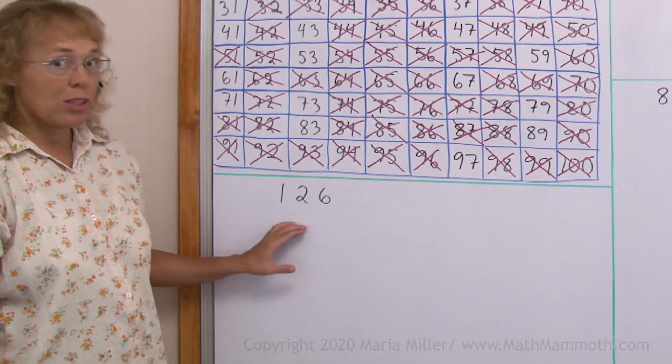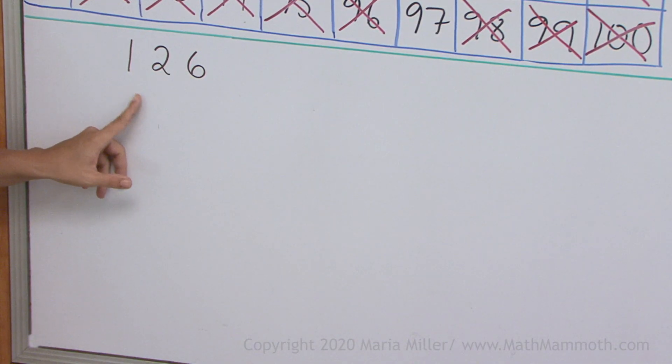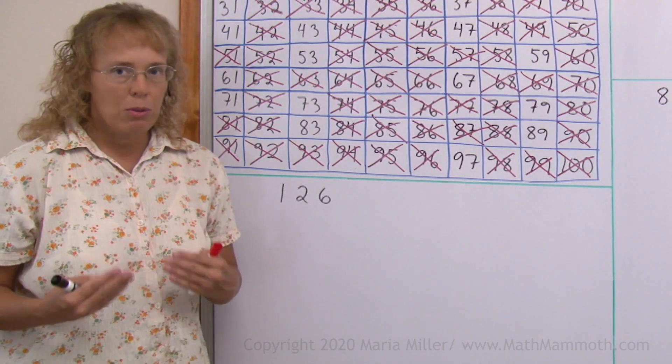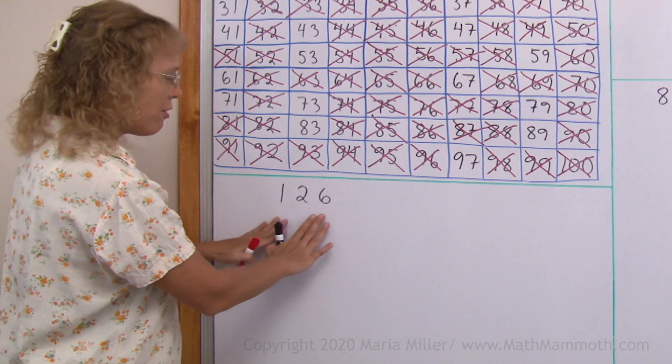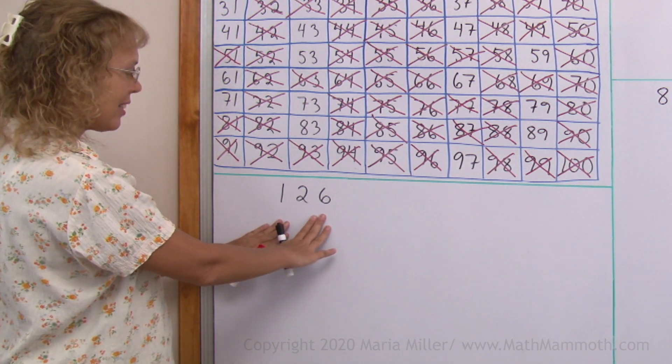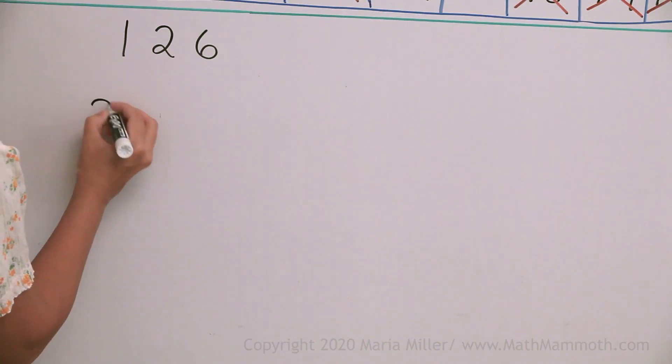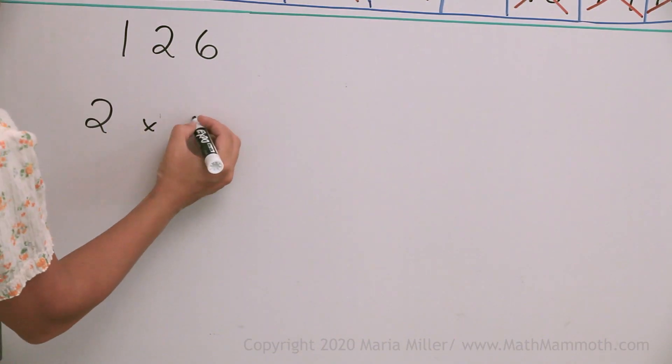Let's now factorize this number into its prime factors, 126. We're going to build a factor tree here, and you can start it out any way you want, as long as you find a factor of 126. It's an even number, so you can write it as 2 times something, right? 2 times 63.